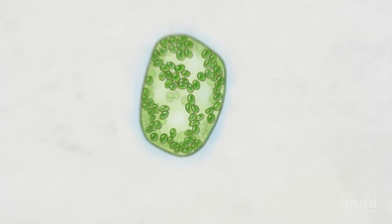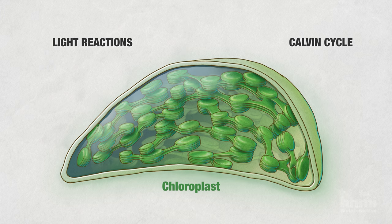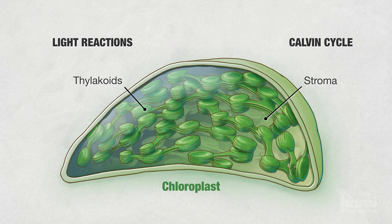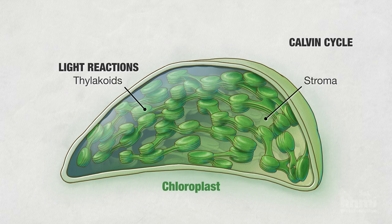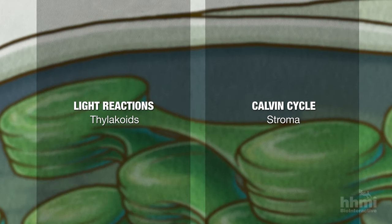Let's take a closer look at a chloroplast, the organelle where photosynthesis takes place. Photosynthesis consists of two sets of chemical reactions: the light reactions and the Calvin cycle. They occur in different regions of the chloroplast. Chloroplasts contain stacks of membrane-lined discs called thylakoids, surrounded by a watery clear fluid called stroma. The light reactions are carried out by molecules in the thylakoid membranes, and the Calvin cycle reactions by molecules in the stroma.